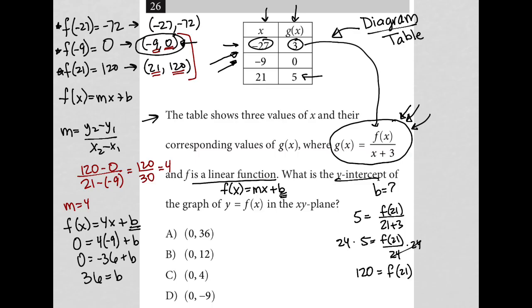So that's it. We found it. 36 is equal to b. Therefore, the answer here is choice A. 0 comma 36 is the y-intercept. Because when x is 0, y is 36. We just found that through this long process. But it wouldn't take you as long as it took me to explain every detail here.